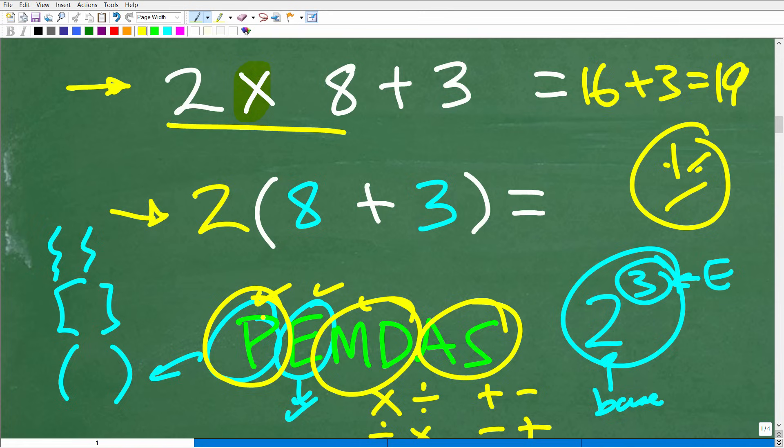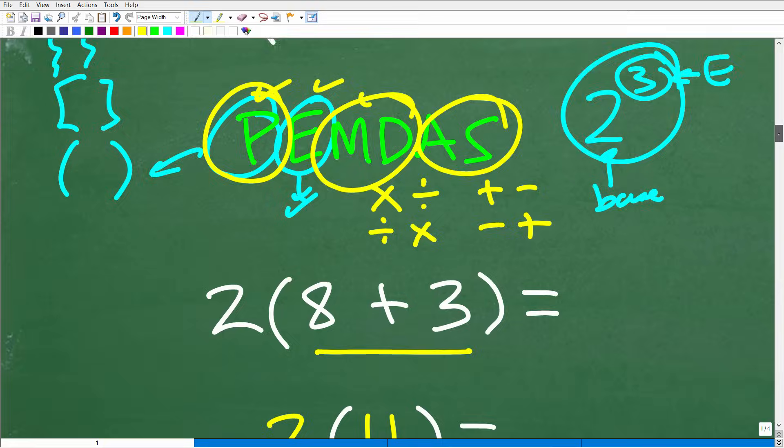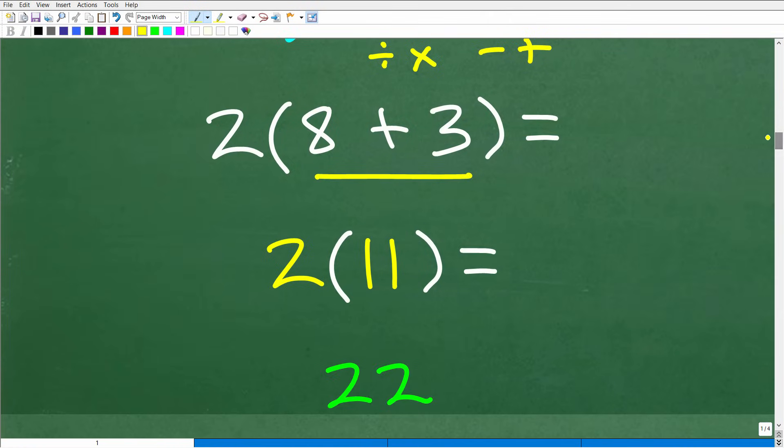This is the problem we need to do. We've got to do the parentheses first. So eight plus three, which of course is 11. But let's go ahead and just play out the rest of this problem, taking one step at a time. So eight plus three is 11. And then two times, there's nothing more to do inside the parentheses. We're just left with this last operation. Two times 11, of course, is 22.